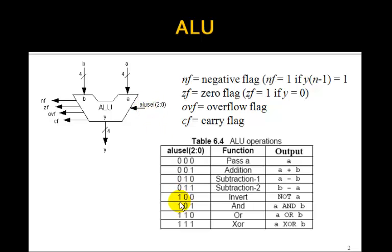If we make ALU select one, zero, zero, then it just inverts A. That is, it does a bitwise NOT operation, or a ones complement of A.